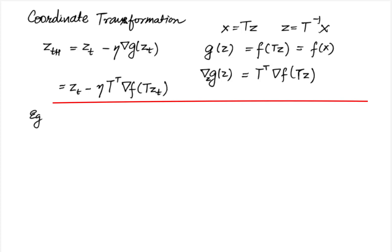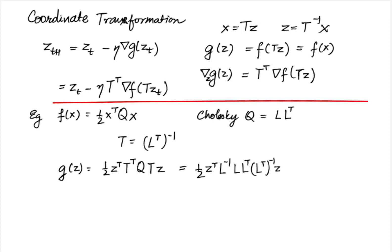The advantage of operating in a different coordinate space would be that maybe in this space the function g z has a better condition number. For instance if f is equal to half of x transpose q x for some arbitrary q and suppose that we carry out a Cholesky decomposition of q which is given by l times l transpose where l is a lower triangular matrix. Then the choice t equal to l inverse transpose gives us g z equal to half z transpose t transpose q tz and substituting q we get half z transpose l inverse l l transpose l transpose inverse into z which is half of z transpose z. So we have a function whose condition number is equal to 1. Any kind of factorization can be used here.